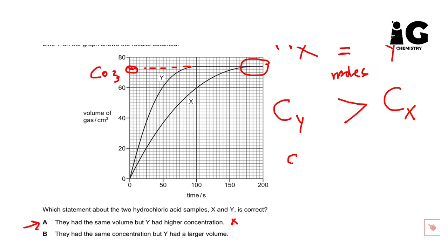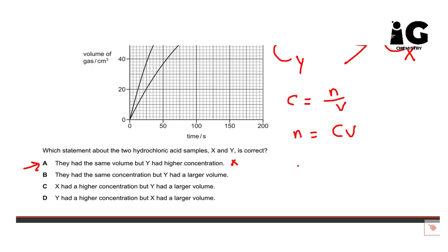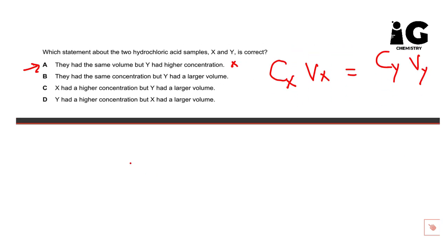C equals N over V, or in other words, N equals CV. So we can substitute here. NX equals NY, so it means CX VX should equal CY VY. And because CY is greater than CX, CY is greater than CX because it's steeper regarding the curve.